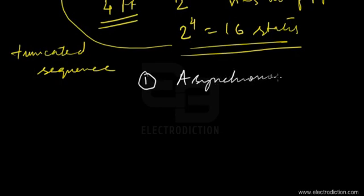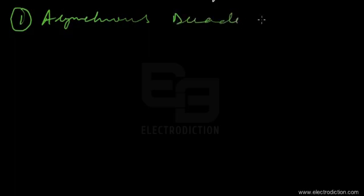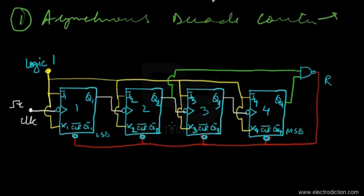There are basically two types of decade counters: the asynchronous type and the synchronous type. We'll begin with the asynchronous decade counter first. Taking a look at the circuit of the asynchronous decade counter, it appears like this.